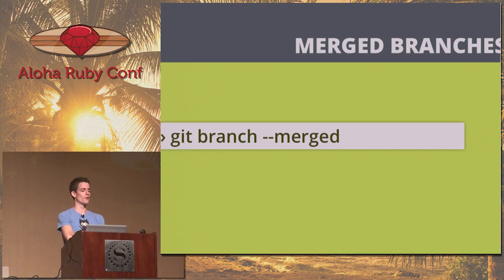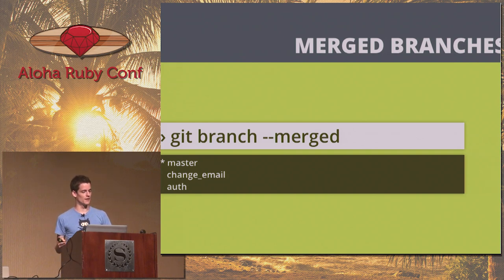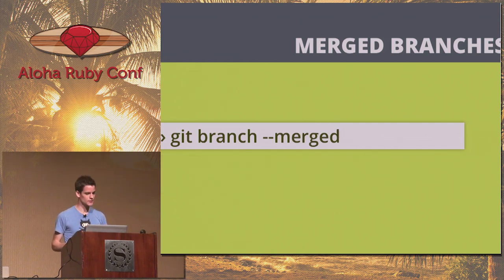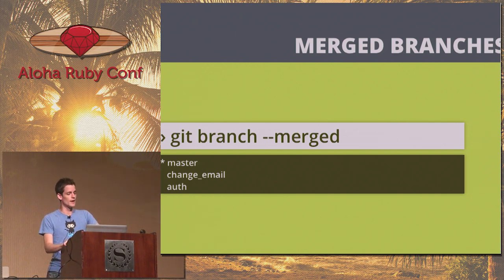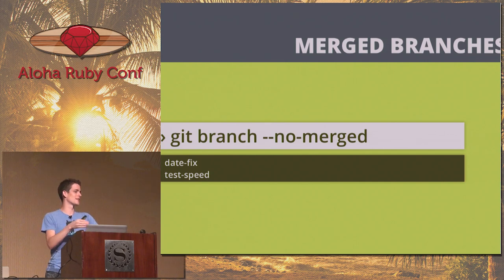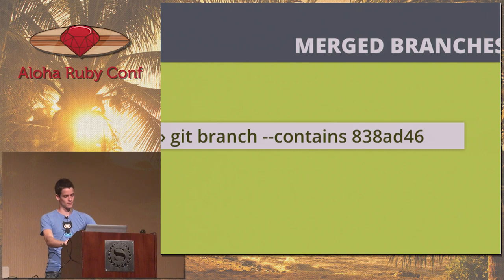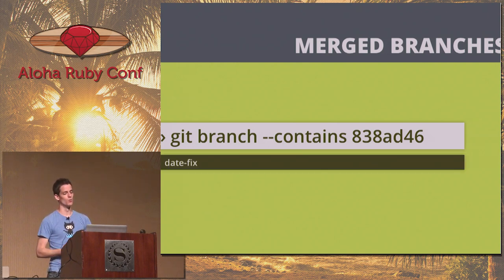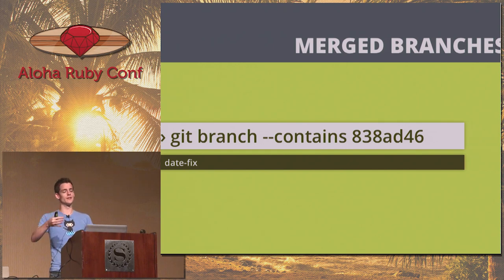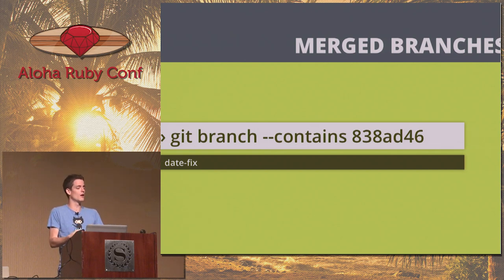Merged branches: you can access via git branch --merged, which shows all branches that have been merged into the branch you're currently on. The reverse is --no-merged, which shows branches that haven't been merged in. Along those same lines, you can say --contains and then a particular SHA, and Git will tell you which branch owns that SHA. Useful if somebody sends you a random GitHub link and you have no idea which branch that SHA belongs to.